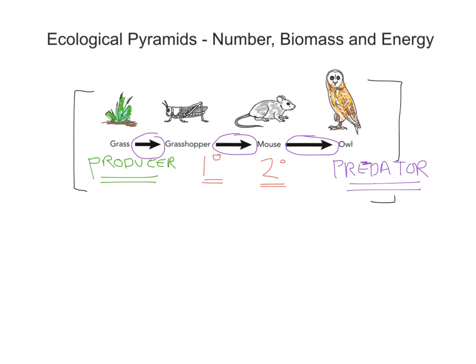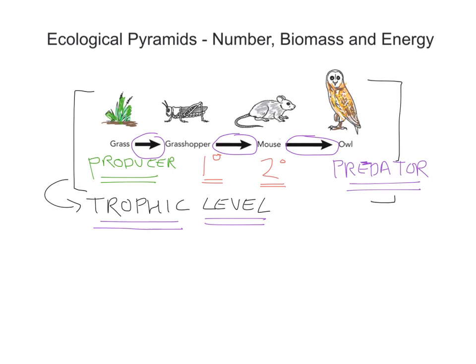This food chain has four different elements to it. Each of these organisms within the food chain, we refer to as occupying a particular trophic level. The term trophic level refers to the position of each organism within a food chain. So the position that each organism occupies in a food chain is known as a trophic level. When you look at these pyramids, all we're doing is drawing diagrams to represent these trophic levels.